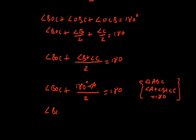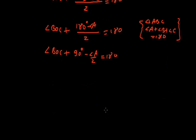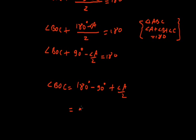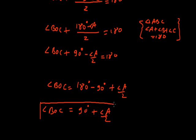So angle BOC plus (180 minus A) divided by 2 equals 180 degrees, giving angle BOC plus 90 minus A by 2 equals 180. Shifting 90 and A/2 to the right-hand side: angle BOC equals 180 minus 90 plus A by 2, which gives 90 degrees plus A by 2. So angle BOC equals 90 degrees plus half of angle A.